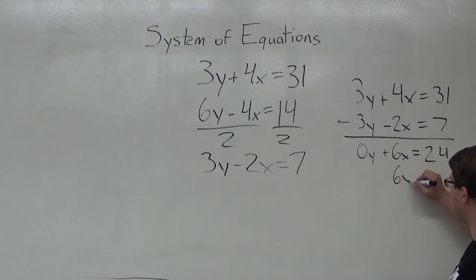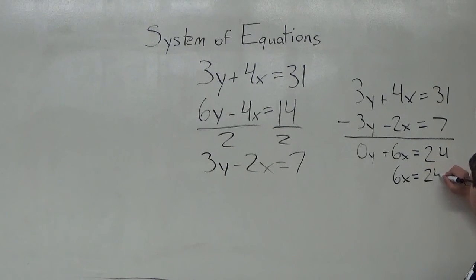So we know 6x is equal to 24, divided by 6 on each side, x is equal to 4.